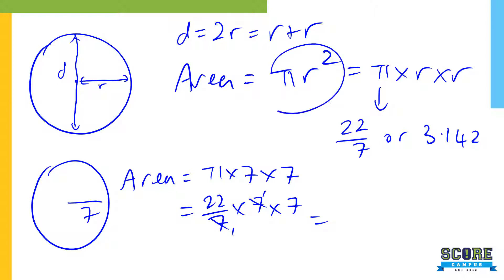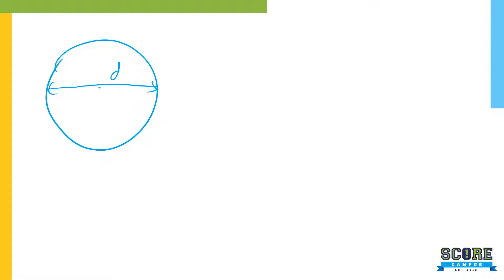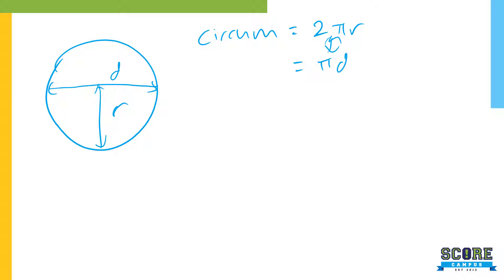Moving on to the circumference: circumference equals 2πr, or also equals πd. How do you relate these two? This is π times 2r, and this is π times d. Two r equals d, so 2πr equals πd. If my diameter is 14, you should be able to tell me my radius is 7.